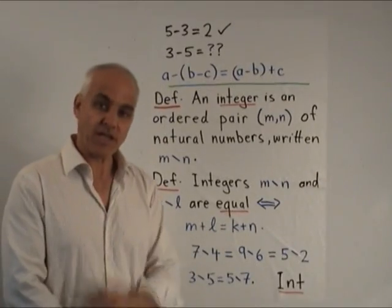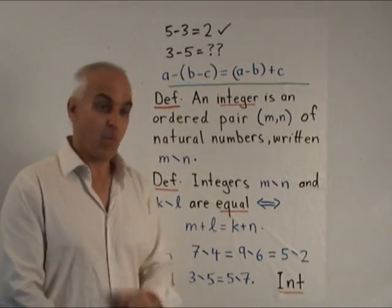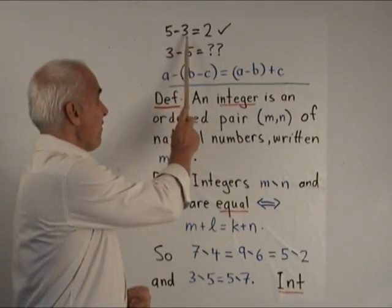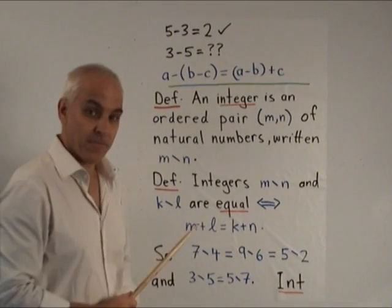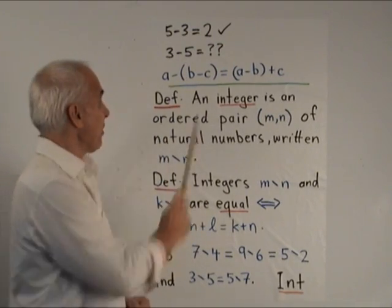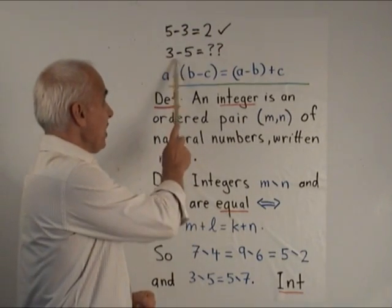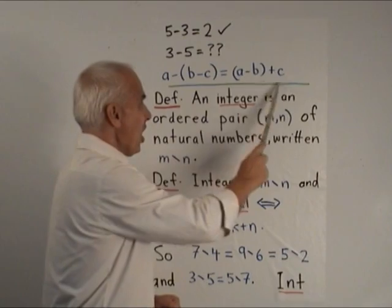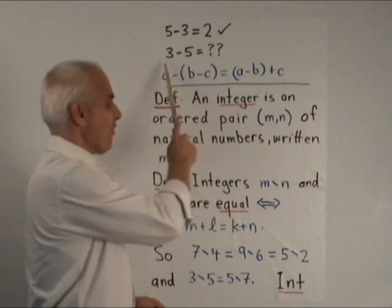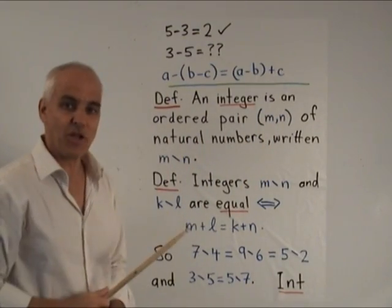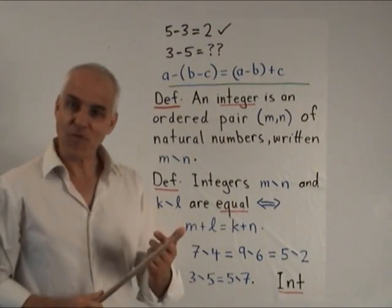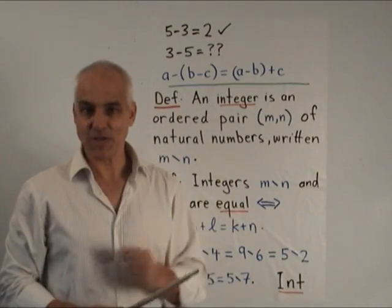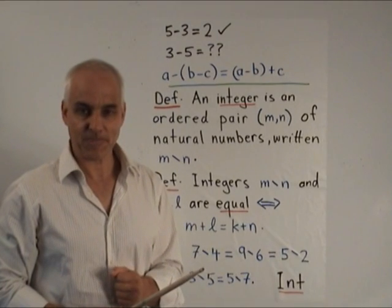So we want a system where we're not only allowed to take five minus three, but also three minus five. And we want a law involving subtraction to work uniformly for all integers a, b, and c.